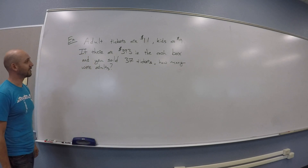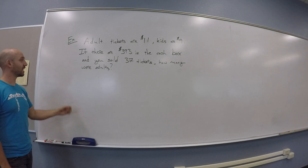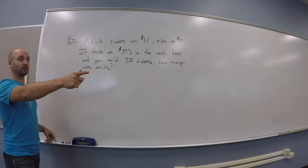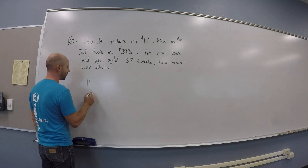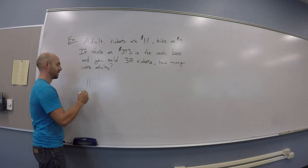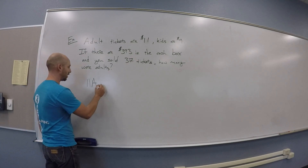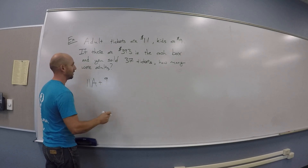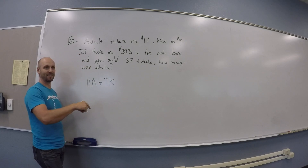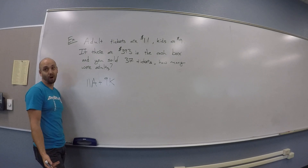Can you write some equations down? This is like a reasonable algebra problem — you've probably got this. So, 11x plus 9x equals 393. Close. I'm with the 11x, but we're going to use variables that mean something. So we're going to do 11a plus 9k. Why is it not both A? Because there's probably different amounts of kids' and adults' tickets — you don't want to force it to be the same.